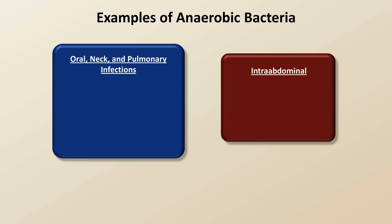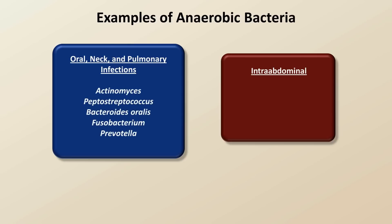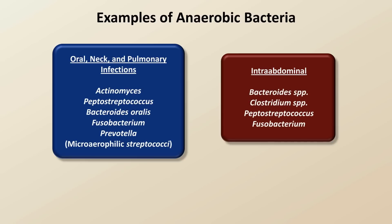Bacteria causing the first category include Actinomyces, Peptostreptococcus, Bacteroides oralis, Fusobacterium, and Prevotella. Although technically not anaerobic, the microaerophilic streptococci share many similar microbiologic and clinical characteristics as Peptostreptococcus and are frequently included on this list. Anaerobic bacteria causing intra-abdominal infections include various species of Bacteroides, Clostridium, Peptostreptococcus, and Fusobacterium.